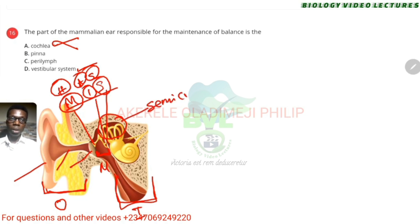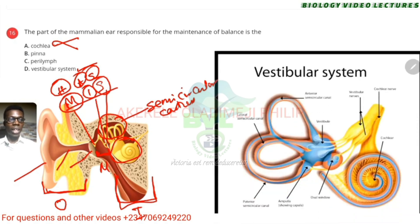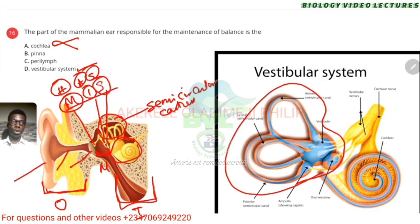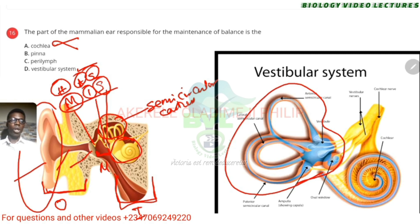The inner ear contains your semicircular canal. This semicircular canal forms part of the vestibular system, which is what we use for balance. This is the area we use for balance. The cochlea is the site of hearing. People used to think balance comes from the pinna — no, it's actually inside. The vestibular system is responsible for balance, whether on a straight line or sideways — linear or transverse balance.